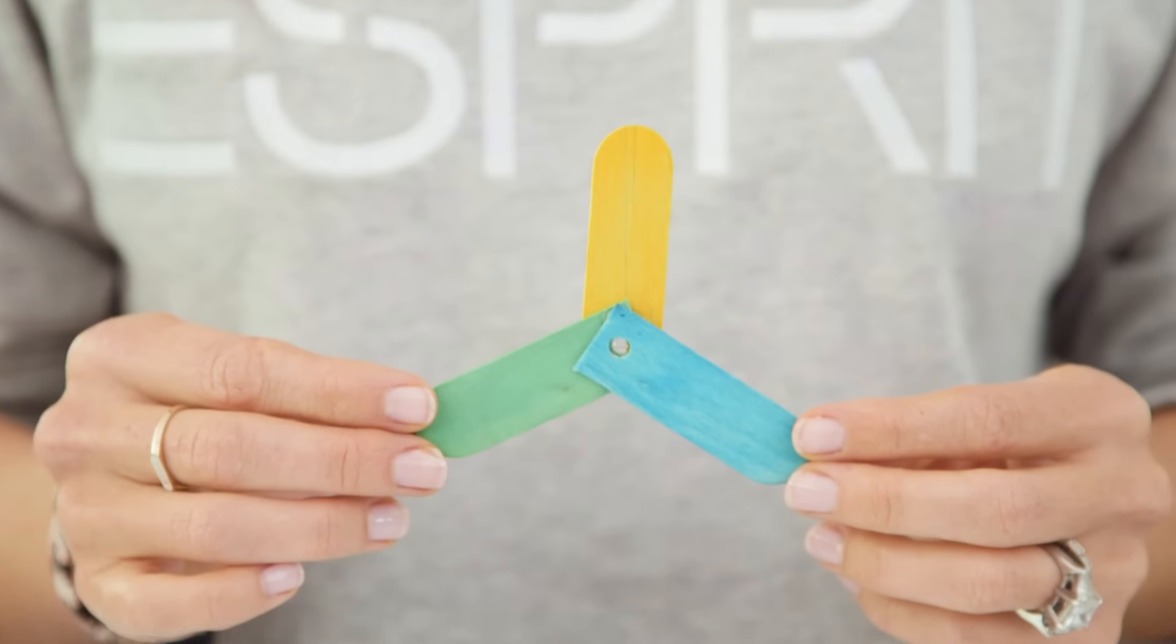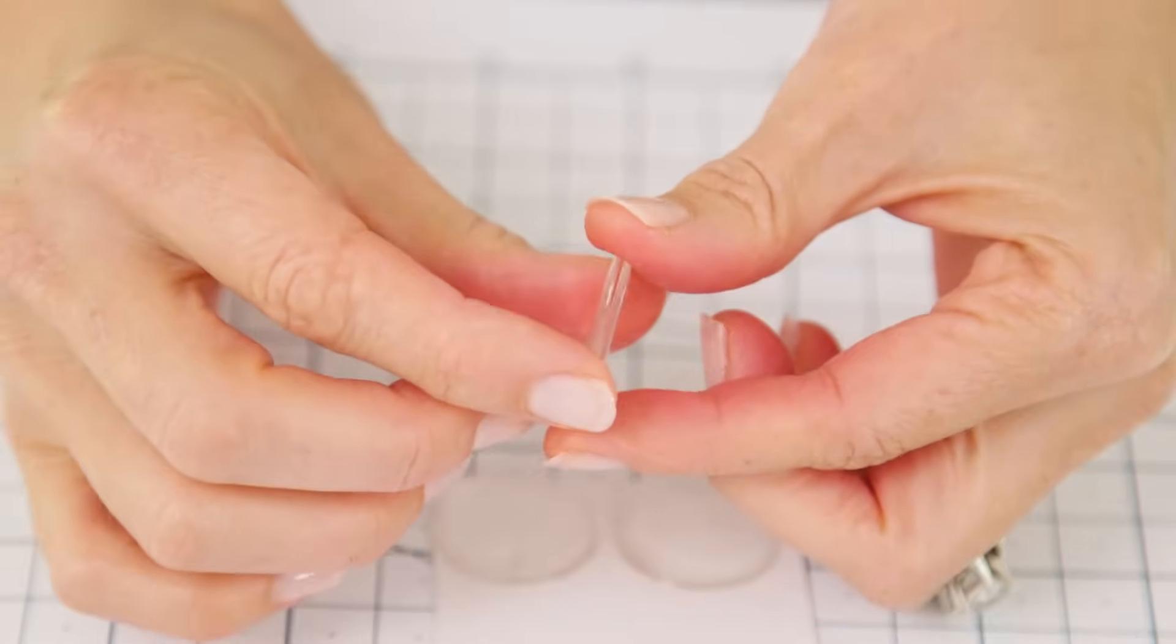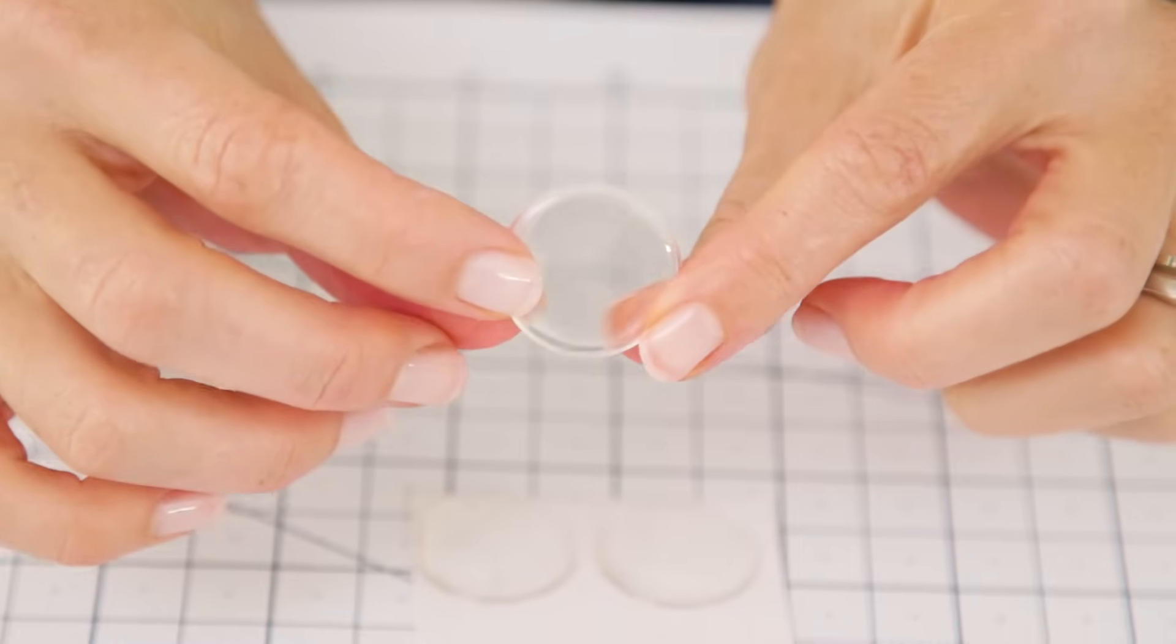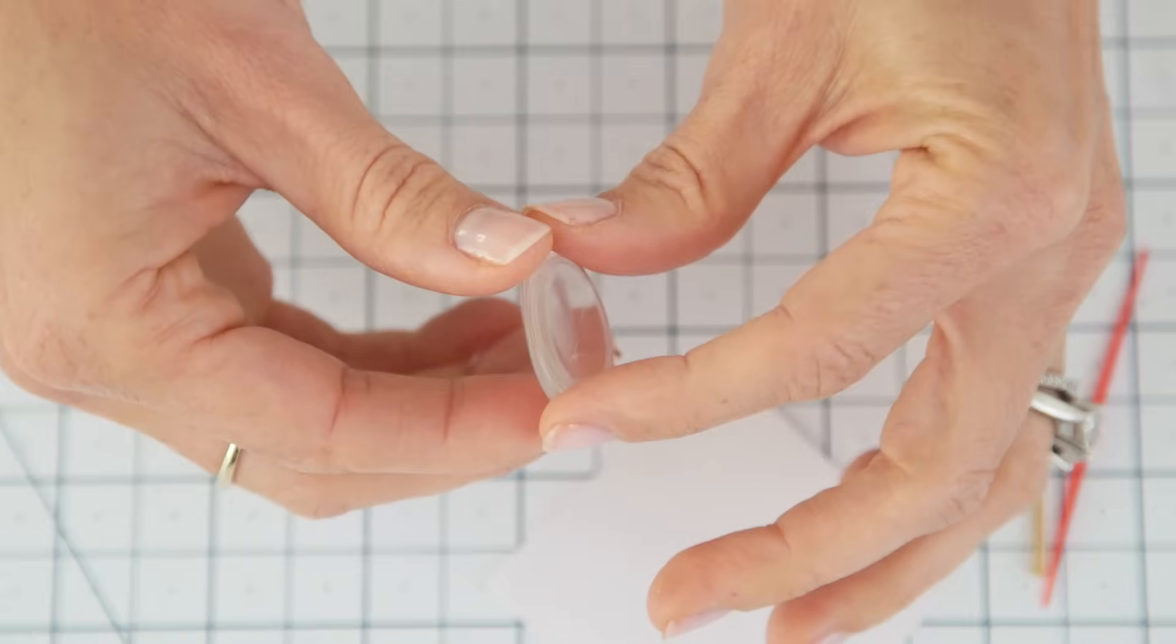The body of our spinner is complete and it should look like this. Now we're going to create the actual spinning mechanism. Simply peel off two bubble caps, you can find these at any craft store, and attach them sticky side together. Repeat this with the other two. This is the top and bottom of our spinner.